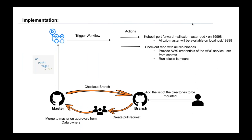The process steps are: a team member creates a branch, adds the list of S3 buckets to be mounted and the corresponding Alluxio directories, commits the job into the Git workflow for execution, and creates a pull request. The data owner or the person responsible for data security then reviews the request, and upon approval, someone on the team merges the branch to main, triggering the Git workflow job. The approval mechanism is through approving the pull request — keeping control firmly in the data security team's or data owner's hands.